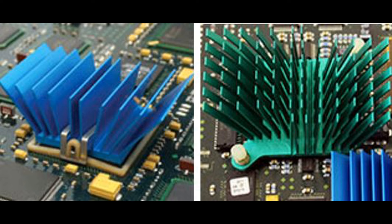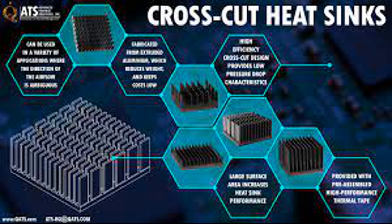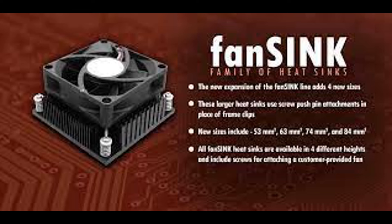The main functions of a heat sink include heat absorption, which is the process by which a material or object takes in thermal energy from its surroundings. In the context of a heat sink, heat absorption refers to the transfer of heat from the electronic component, such as a CPU or GPU, to the heat sink itself. When an electronic component operates, it generates heat due to the flow of electric current through its circuitry. This heat must be removed to prevent the component from overheating, which can lead to performance degradation or even failure.